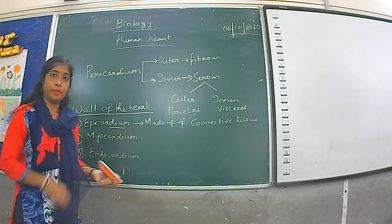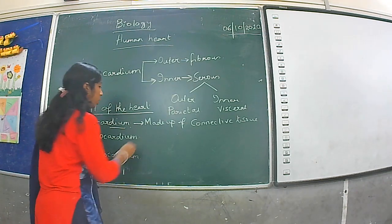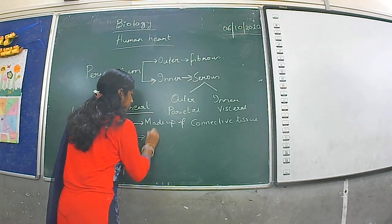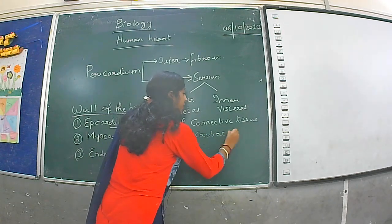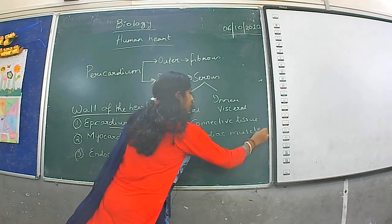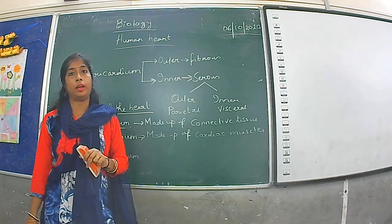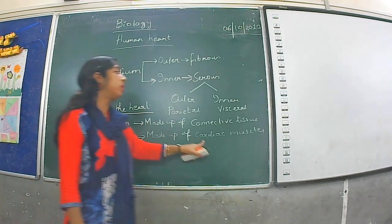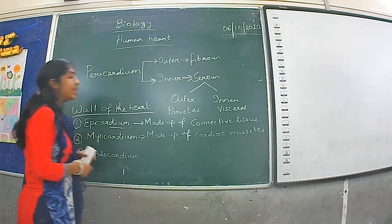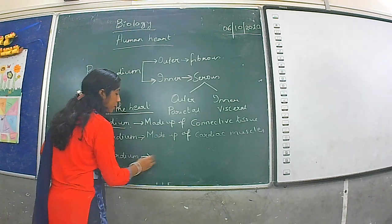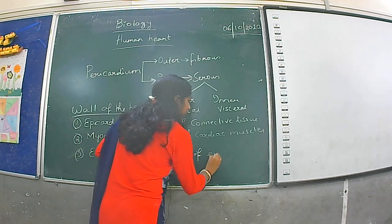The myocardium is the middle layer and is made up of cardiac muscles. Amongst all the layers, myocardium is the thickest one because of the presence of cardiac muscles. The endocardium is made up of endothelial cells.